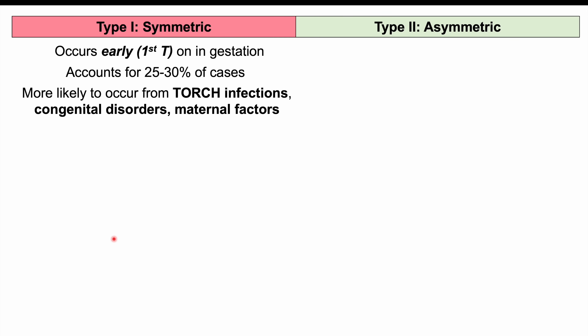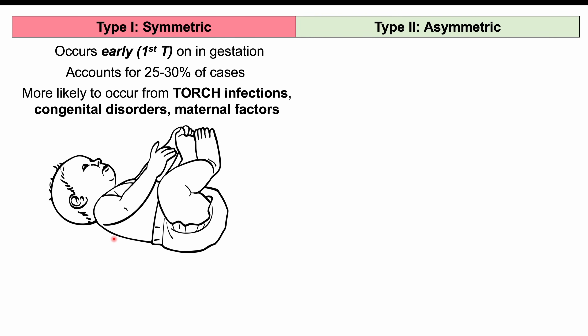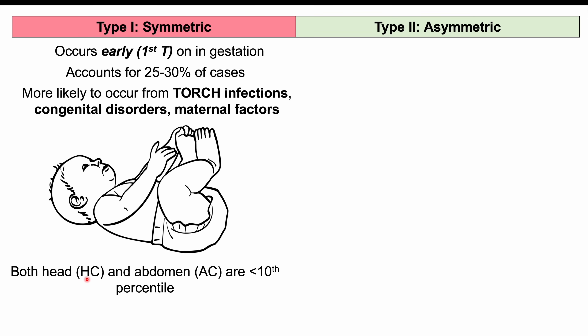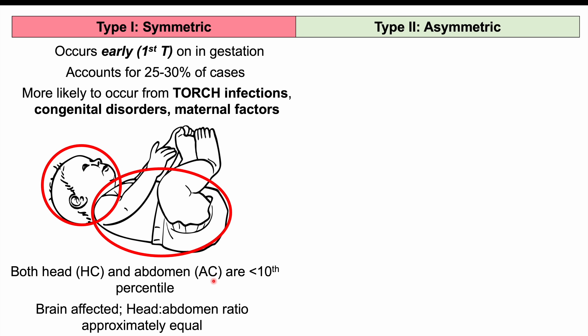In symmetric FGR, the reduction in body size is symmetrical — both the head circumference (HC) and abdominal circumference (AC) are less than the 10th percentile for gestational age. Both the head and abdomen are affected, including the brain. However, when looking at the ratio between head and abdomen, it is approximately equal.